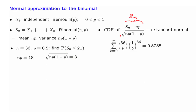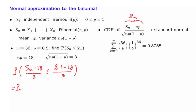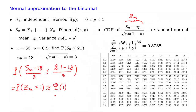Since we know something about the CDF of the standardized random variable, we need to rewrite the event of interest in terms of it. The event that Sn is less than or equal to 21 is the same as Sn minus 18 less than or equal to 3, which after dividing both sides by 3 gives us the probability that Zn is less than or equal to 1. Since Zn is approximately a standard normal, we use the CDF of the standard normal, which is phi of 1, and look it up in the normal tables.